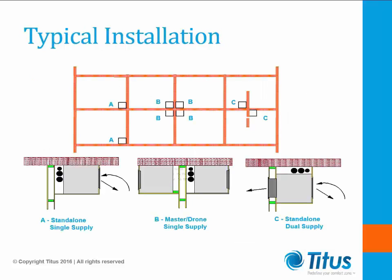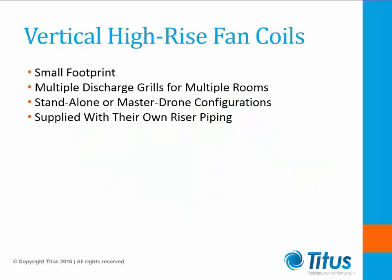Here are three typical installations for vertical stack units. The master-drone installation is the most cost-effective due to the use of one riser set supplying two fan coil units. Between configurations A, B, and C: B is the most cost-effective, as two riser sets can service four units; in C, two riser sets can service only two units. To summarize the vertical stack fan coil unit advantages: they have a small footprint, can have multiple supply grills for multiple rooms, stand-alone or master-drone configurations for multiple rooms or tenants, and are supplied with their own risers.